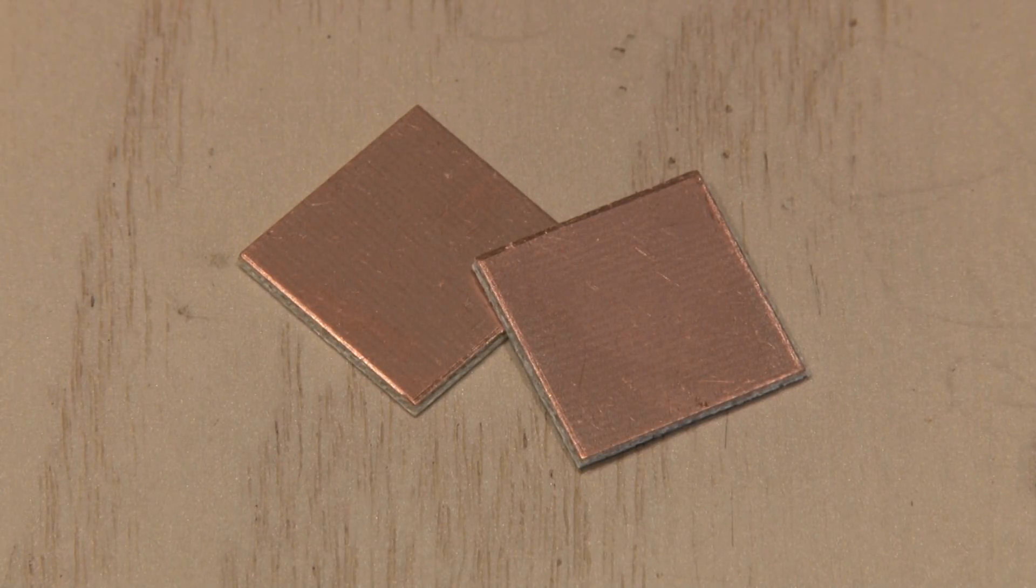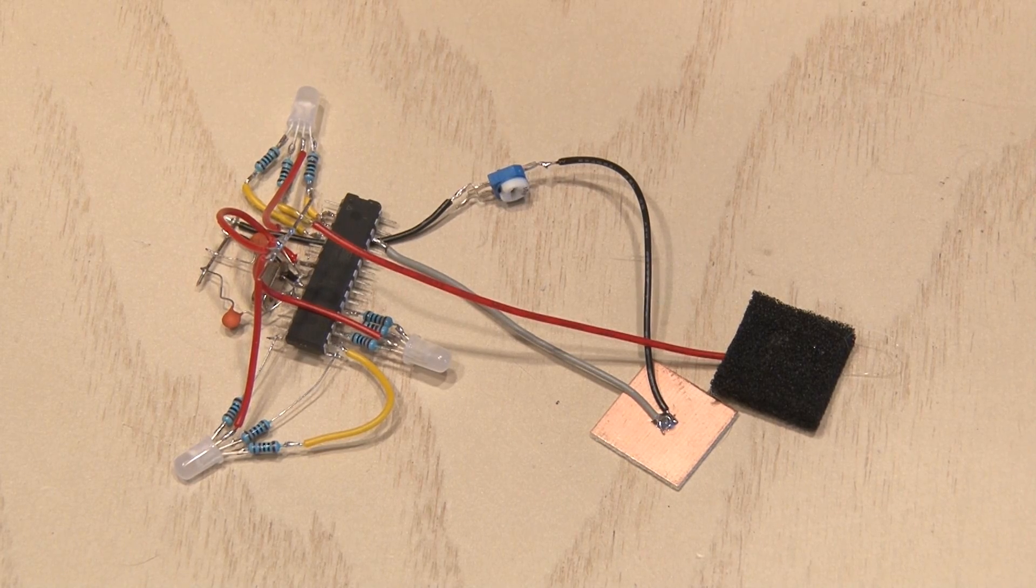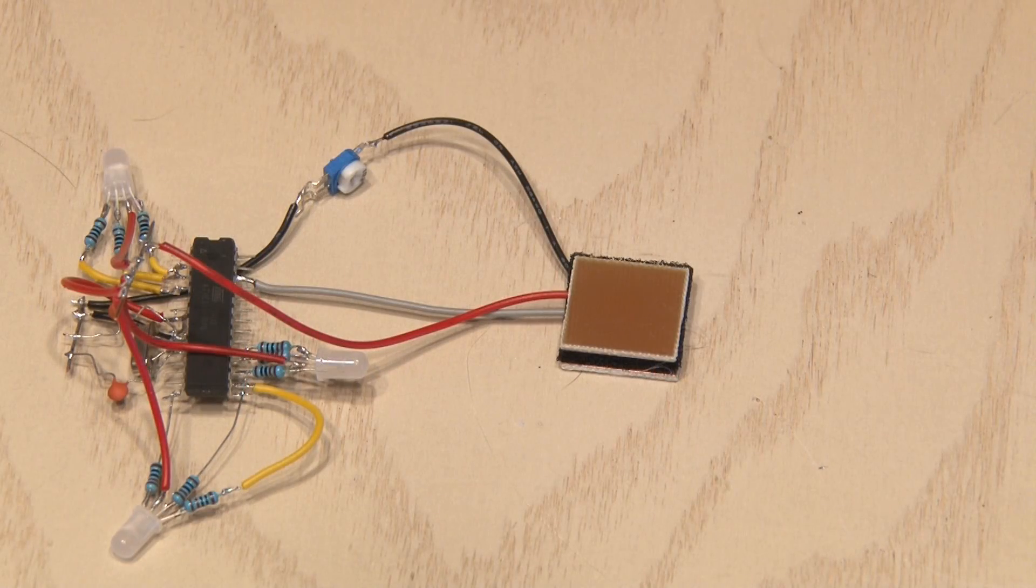Two small one-sided copper PCBs will be completing the circuit. So we'll add that to the circuit along with a small piece of conductive foam. This will allow power to travel through the copper PCBs.